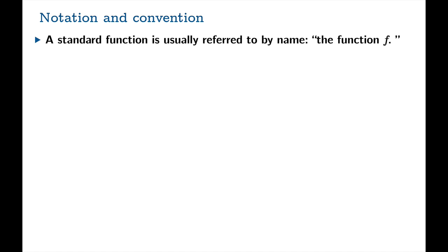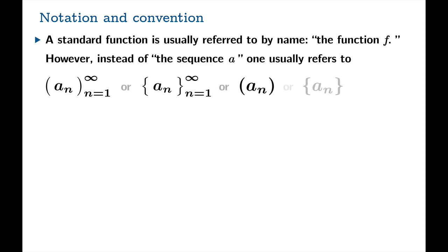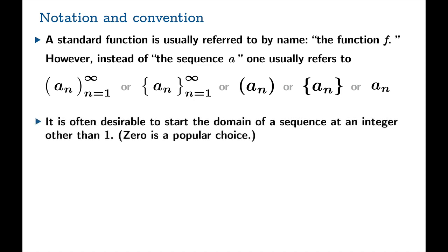Now, a standard function is usually referred to by name. You can often just say the function F. For some reason, we shy away from doing that. So you rarely see someone just talk about the sequence A. You usually have to add some sort of decoration to it just to let everybody know that you're talking about a sequence. So these are the options you might see when referring to a sequence. And I said that the domain was the set of natural numbers, but it's often desirable to start somewhere besides one. So zero, for example, is a popular choice.